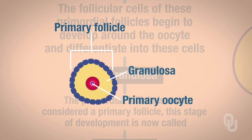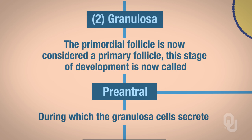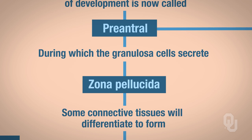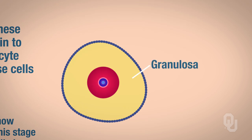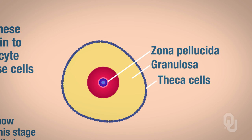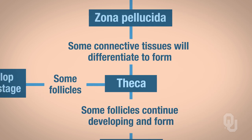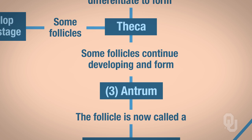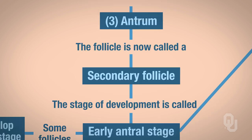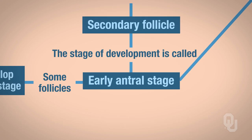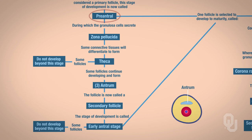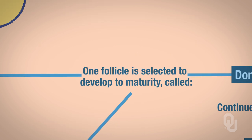This stage of development is called the preantral stage. Once we have those granulosa cells, they're going to secrete what's called the zona pellucida, which will differentiate to form what are called theca cells. Now some follicles don't develop any further — remember, this is happening at puberty, so one primary oocyte per month is going through this development. Some follicles will continue developing and form a fluid-filled cavity called the antrum; this is now called a secondary follicle, also called an early antral follicle or the early antral stage. Some follicles don't develop beyond this stage either.